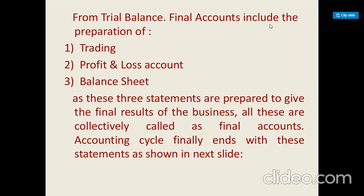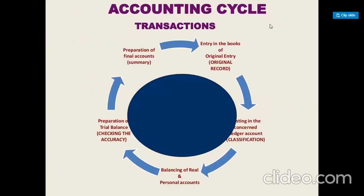The accounting cycle finally ends with these statements. When a transaction happens, it is entered first of all in the original entry or original record book. From there, it is classified into various ledgers. After classification into ledger, balances are prepared — that is ultimately termed as trial balance — and from the trial balance, the final accounts or summary is prepared.